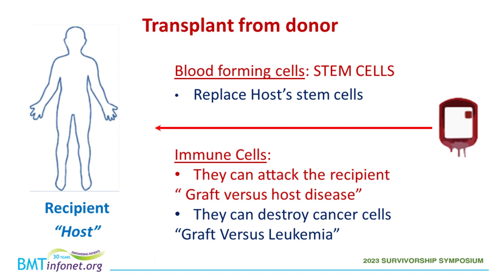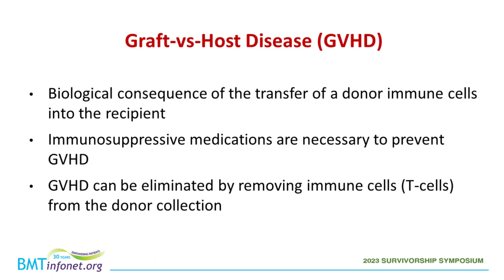As a refresher, the transplant from a donor implies the donation of the bag — the graft. This graft coming from the donor is made of many components, many types of cells. The two big components are the blood-forming cells, the stem cells — the ones that will replace the recipient cells — and also the immune cells coming from the donor. The immune cells from the donor can indeed attack the recipient, and they can be responsible for graft vs. host disease.